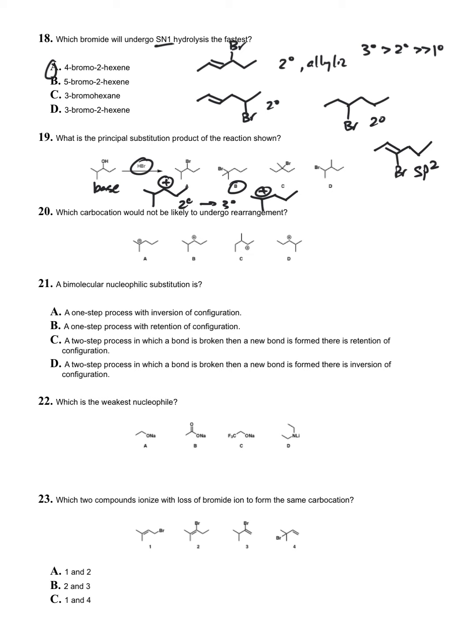Question twenty: which carbocation would not be likely to undergo rearrangement? We classify them: tertiary, secondary, secondary, secondary. The answer is A. It's tertiary. It will not undergo a rearrangement because it's the most stable it can be.